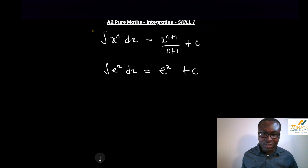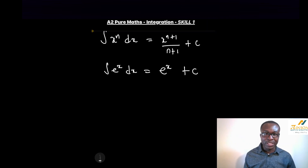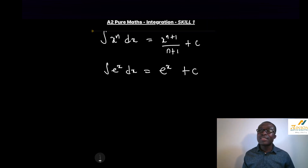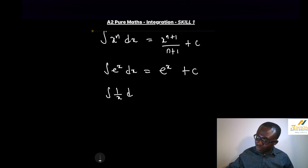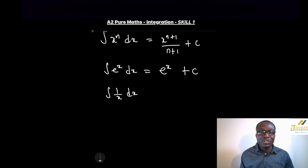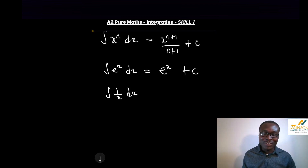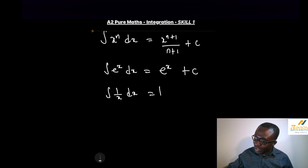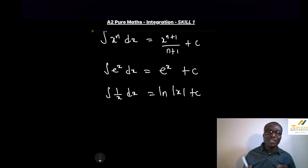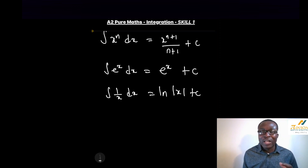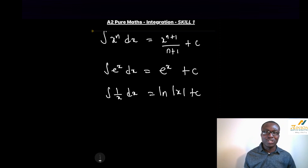This is the next standard one. The integration of 1 over x with respect to x — this is not simple to just rewrite as an index term and try to integrate; it doesn't work like that. As standard, this becomes the natural log of the modulus of x. Don't forget to add your C. Why is it the modulus? Because log values cannot go into negatives, so we have to make sure our answer is always positive. We assume our x-values to always be positive.